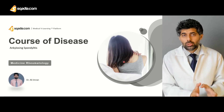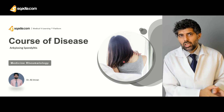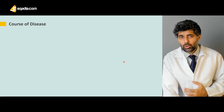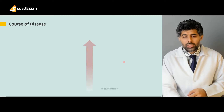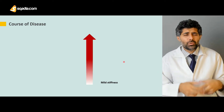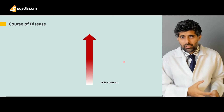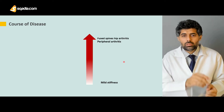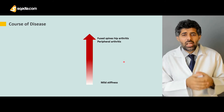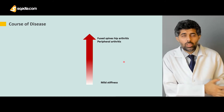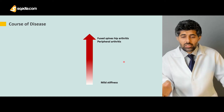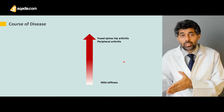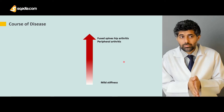Let's talk about the course of disease in ankylosing spondylitis. The course starts from mild stiffness, usually with a dull pain at the lower back area, and then progresses to a fused spine with hip arthritis and even peripheral arthritis. So the course ranges from mild stiffness to fused bone along with both hip arthritis and peripheral arthritis.